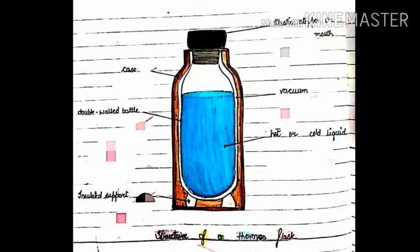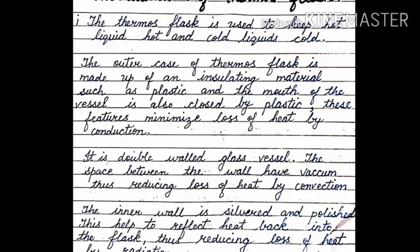Today I'm going to explain the structure of a thermos flask. The thermos flask is used to keep hot liquids hot and cold liquids cold. In this video I will explain how the thermos flask minimizes loss of heat by conduction, convection, and radiation.